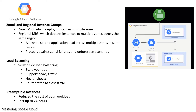Zonal and regional instance groups: A zonal managed instance group deploys instances to a single zone, while a regional managed instance group deploys instances to multiple zones across the same region. Regional managed instance groups are generally recommended over zonal managed instance groups because they allow you to spread the application load across multiple zones instead of confining your application to a single zone.